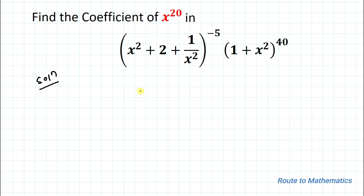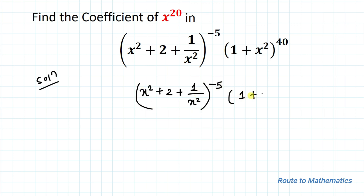We have the given expression: (x² + 2 + 1/x²) to the power −5, multiplied with (1 + x²) to the power 40. Our first step must be to simplify this expression.